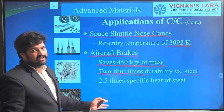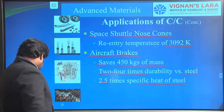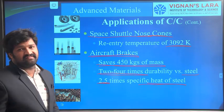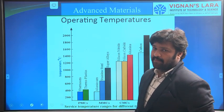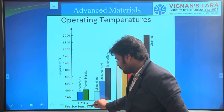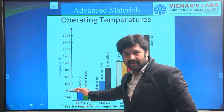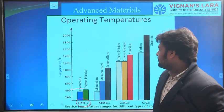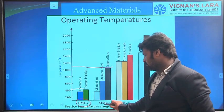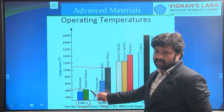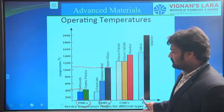Comparing operating conditions of various materials: if the operating temperature is less than 400 degrees centigrade, we go for Polymer Matrix Composites (PMC). If operating temperatures are up to around 1100 degrees, we go for Metal Matrix Composites (MMC) — using aluminum around 400°C, stainless steel for higher, and super alloys for even higher temperatures.